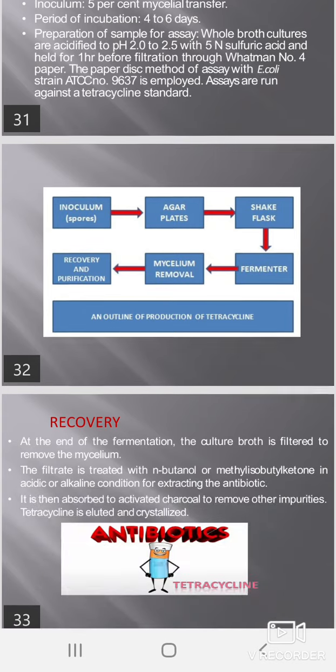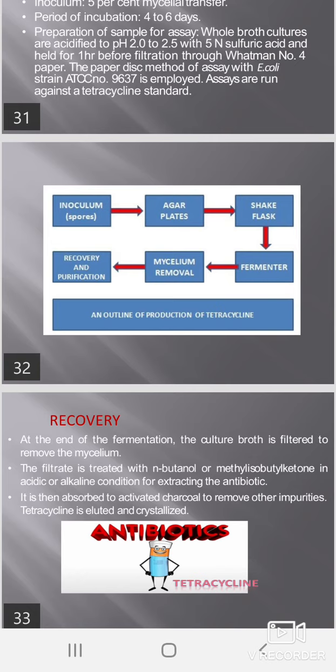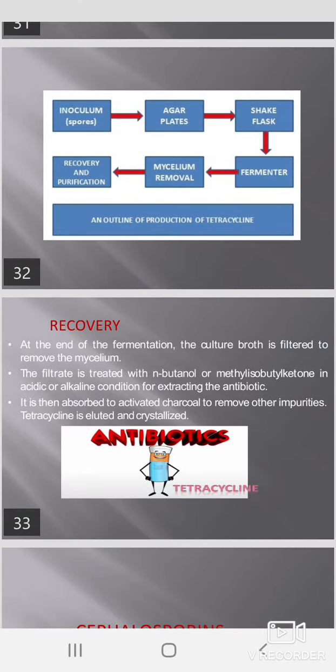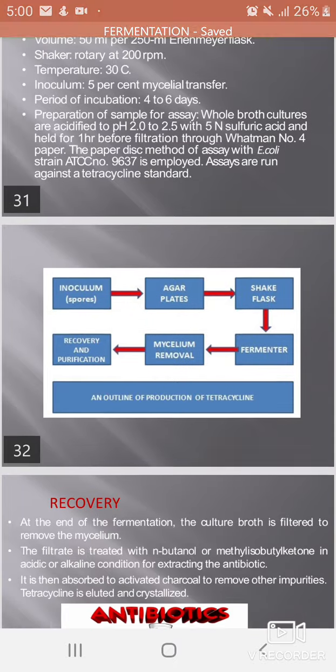Recovery and purification: At the end of fermentation, the culture is filtered to remove the mycelium. The filtrate is treated with n-butanol or methyl isobutyl ketone under acidic conditions for extracting the antibiotic. It is then absorbed onto activated charcoal to remove other impurities. Tetracycline is then eluted and crystallized.